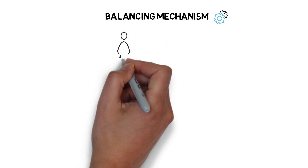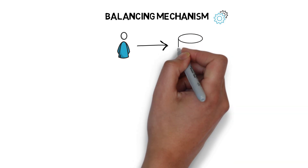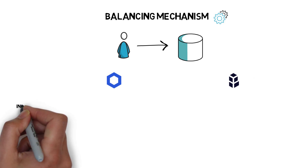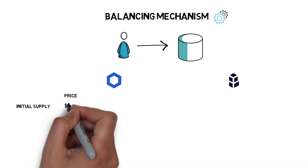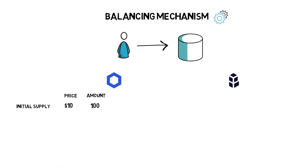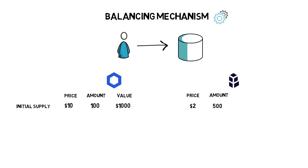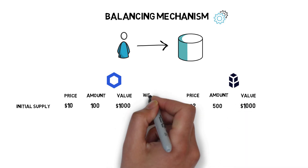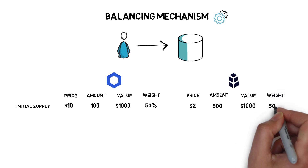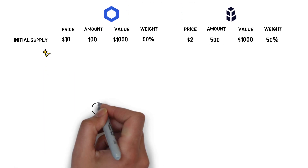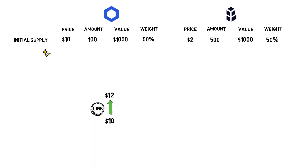Let's see how the balancing mechanism works. We start with a liquidity provider supplying equal value of two assets to the pool. Let's assume the pool holds two assets: LINK and BNT. After the initial supply is added, the state of the pool is not much different from V1 pools or Uniswap pools. Now let's assume that the LINK price went up to $12 across multiple exchanges and the price is not yet reflected in our LINK/BNT pool.